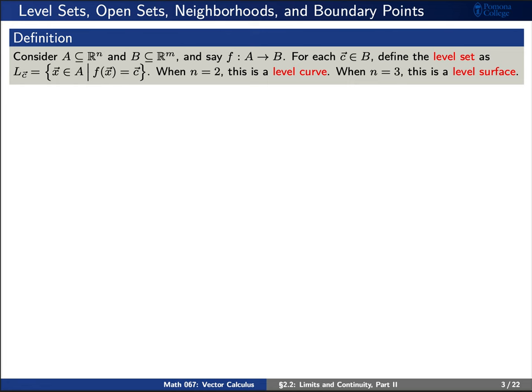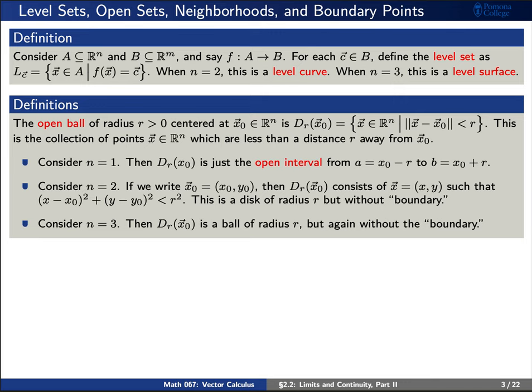Next, let's review the definition of an open ball. An open ball of radius r centered at a point x₀ is just the collection of points x which are less than a distance r away from this center x₀. When n is equal to 1, this is nothing more than the open interval from x₀ minus r to x₀ plus r. When n is equal to 2, this is a disk of radius r but without boundary. And similarly, when n is equal to 3, this is a ball of radius r, but again without boundary.